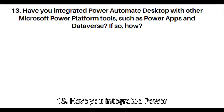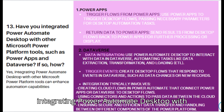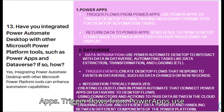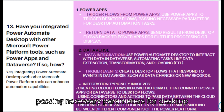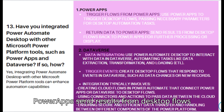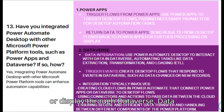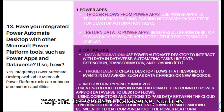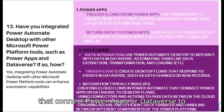Question 13: Have you integrated Power Automate Desktop with other Microsoft Power Platform tools such as Power Apps and Dataverse? Yes, integrating Power Automate Desktop with other Power Platform tools can enhance automation capabilities. With Power Apps, you can trigger flows from Power Apps, passing necessary parameters for desktop automation tasks, and send results from desktop flows back to Power Apps for further processing or display. With Dataverse, you can use Power Automate Desktop to interact with data, automating tasks like data extraction, transformation, and loading (ETL), and create desktop flows that respond to events in Dataverse such as data changes or new records. Integration typically involves creating cloud flows that connect Power Apps or Dataverse to desktop flows, using connectors and actions to pass data between cloud and desktop environments.